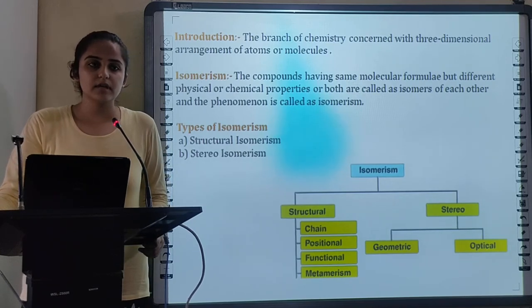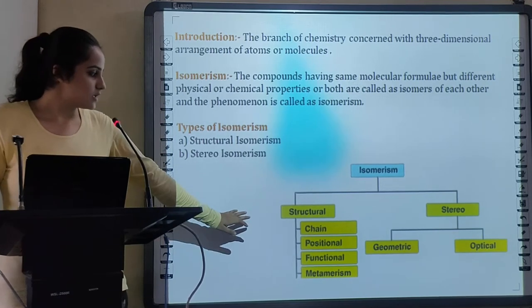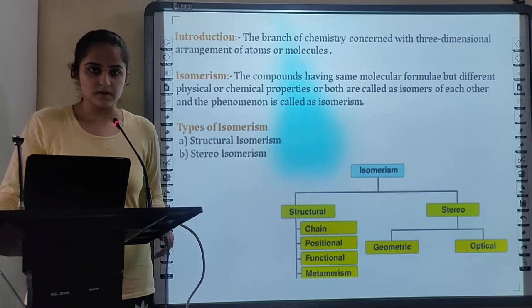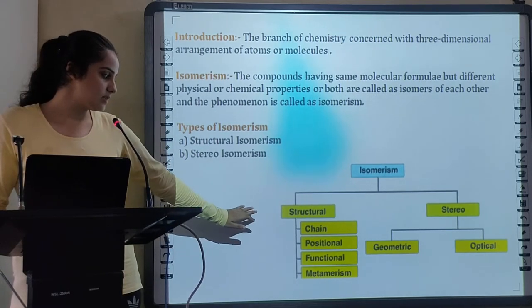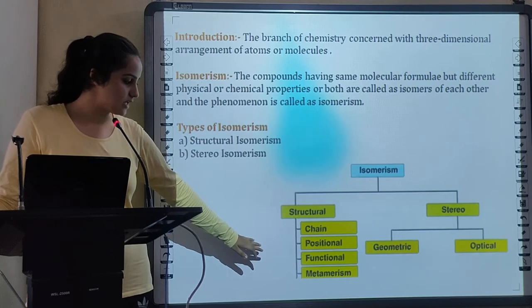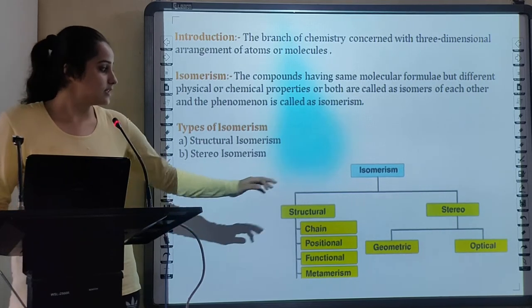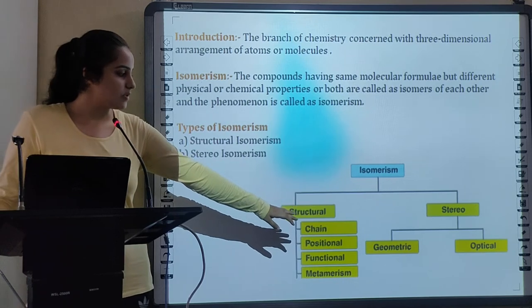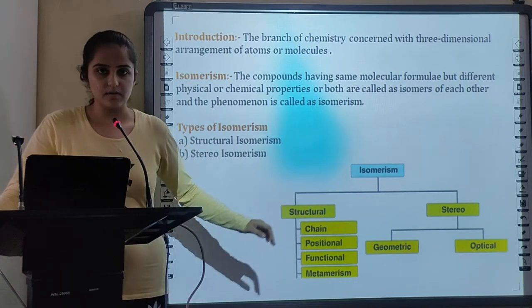Isomerism can further be characterized into Structural Isomerism and Stereo Isomerism. So Structural Isomerism is also divided into Chain Isomerism, Positional Isomerism, Functional Isomerism and Metamerism. Whereas Stereo Isomerism is divided into Geometrical Isomerism and Optical Isomerism.